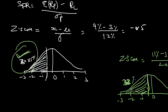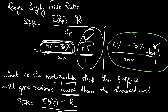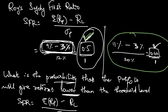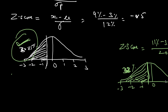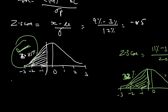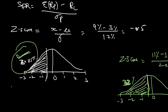So I can select the portfolio either directly by choosing the higher SFR, or by comparing the probabilities of falling below the threshold. In CFA Institute exam questions, we never know which way they will ask, so we should know both sides — selecting the portfolio based on the SFR ratio directly, and also on a probability basis. Thank you.